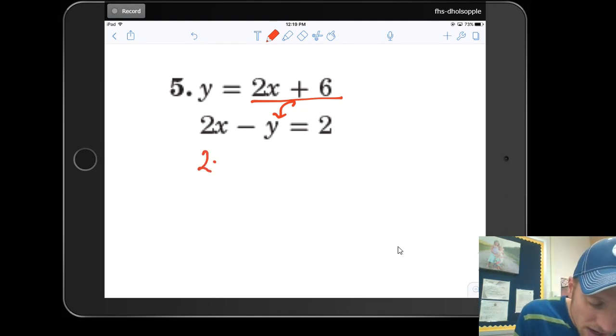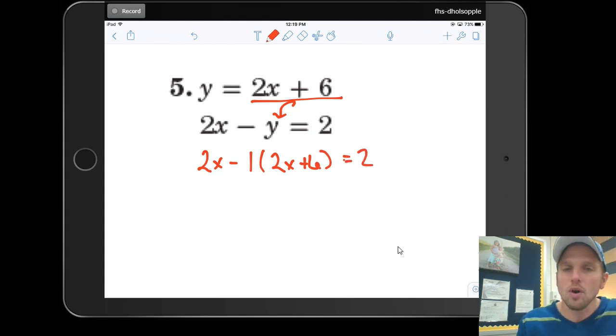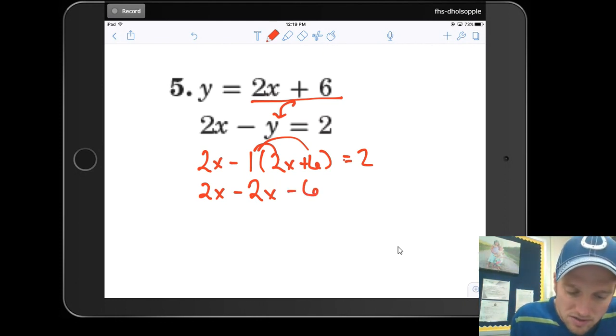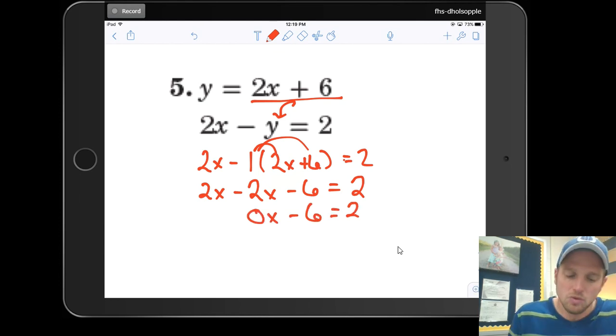So I've got 2x minus, I'm not going to use y this time, I'm going to use 2x plus 6 is equal to 2. Well, this is like a negative 1 right there. So we've got the distributive property here, 2x, and then negative 1 times 2x is going to be a negative 2x. Negative 1 times 6 is going to be a negative 6. And I have 2. Now let's simplify this. 2x minus 2x is going to be 0x minus 6 is equal to 2.